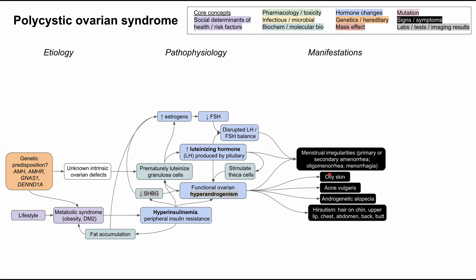There are a number of symptoms related to high androgens — to high testosterone in the body. This includes oily skin, acne vulgaris, androgenic alopecia — which is essentially male-patterned hair loss — and hirsutism. Hirsutism is when you have hair on the chin, upper lip, and in male patterns on the chest, abdomen, back, and buttocks.